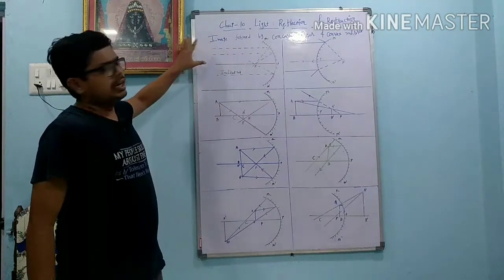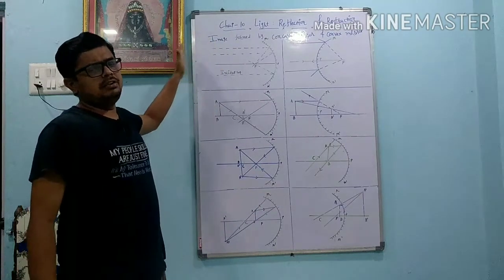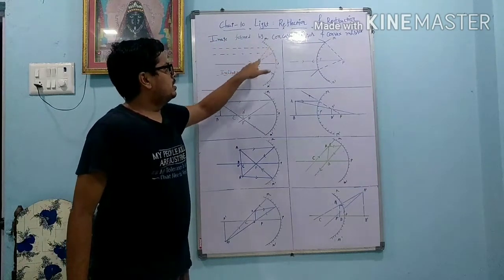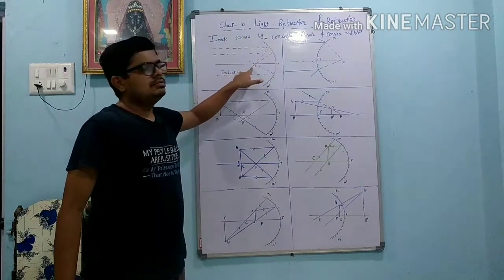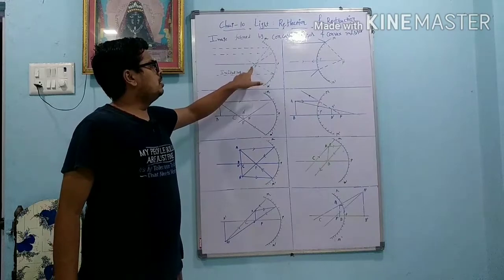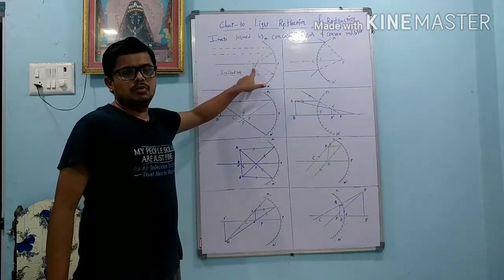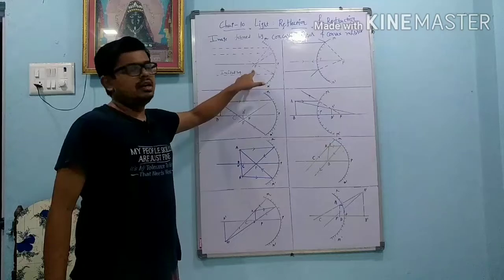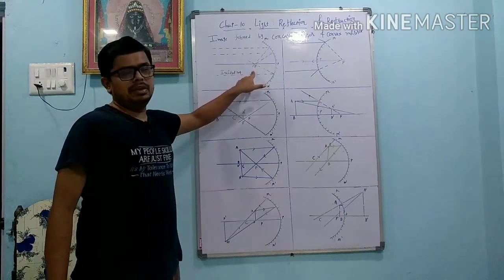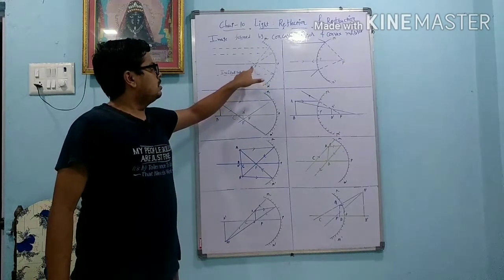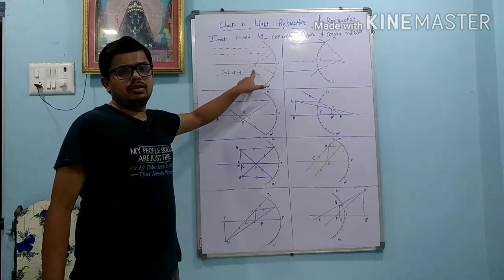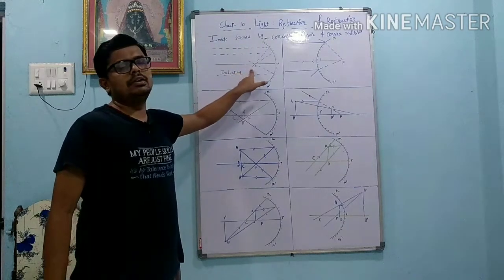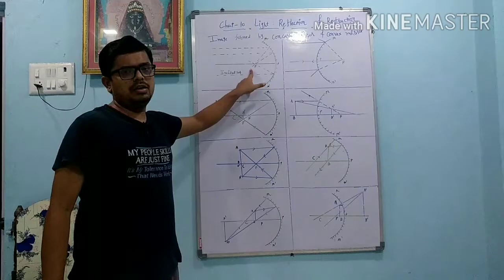Suppose we keep the object at infinite distance - means very far - and all the rays are parallel to the concave mirror. Then they meet at one point; that point is called the Principal Focus. So here the image is obtained at the Principal Focus. It is highly diminished, and the nature is real and inverted, because after reflection the rays meet.